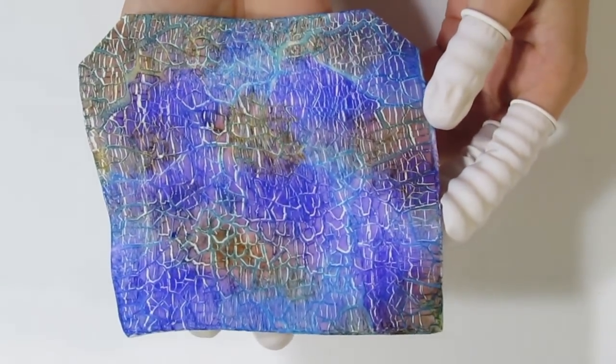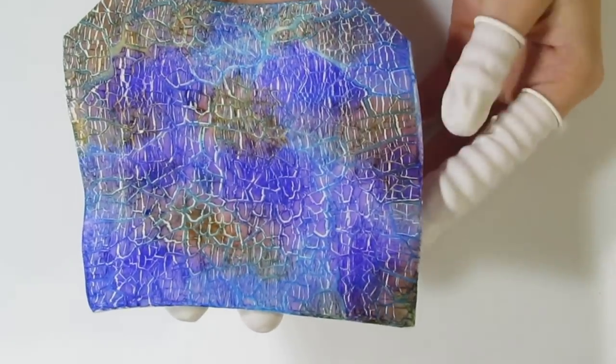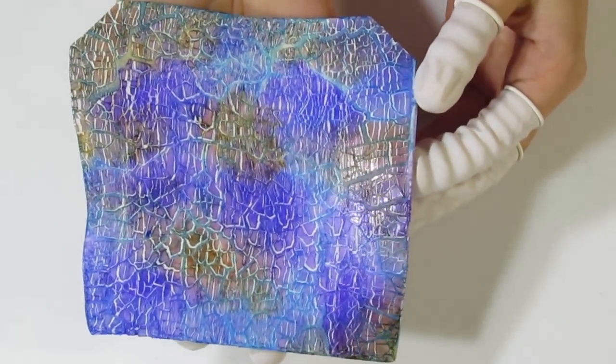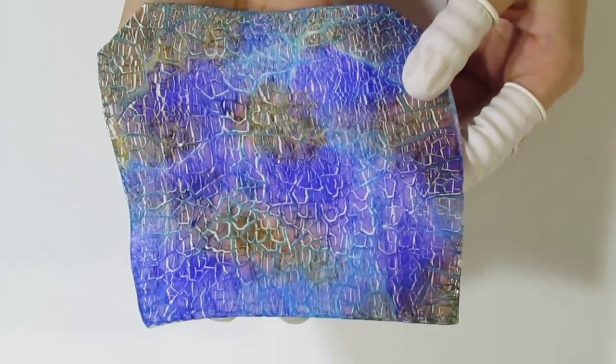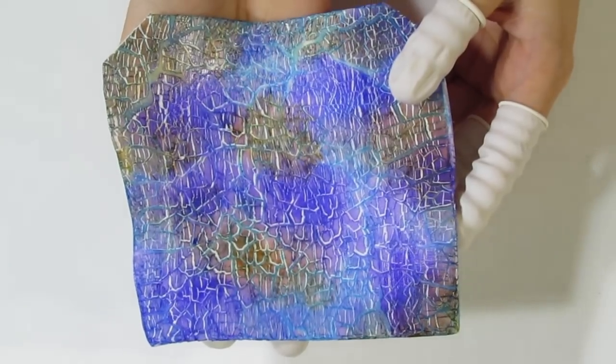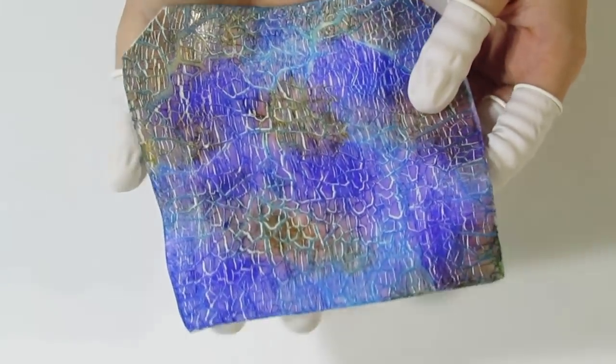Then you can apply alcohol inks to it like I have over here and it looks really nice. The alcohol inks do stain the crackle but it has a different sort of staining effect than the clay underneath and so it gives a really interesting effect. And I've shown this veneer on my Facebook account before and you guys really liked it.